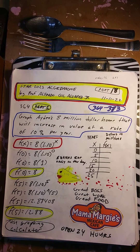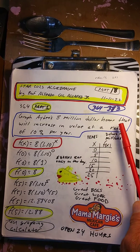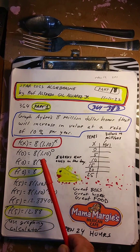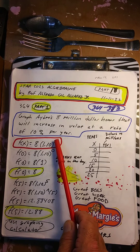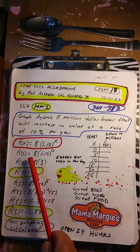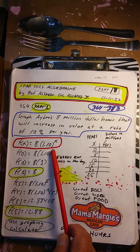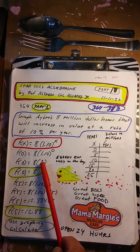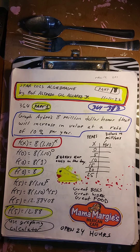Graph Aiden's $8 million home that will increase in value at the rate of 10% per year. So here's the function: f(x) = 8(1.10)^x. Now here's the number we're going to use. Put f(0): 8 times 1.10 to the 0. 1 times that is going to be f(0) = 8. Let's just do it in a calculator.